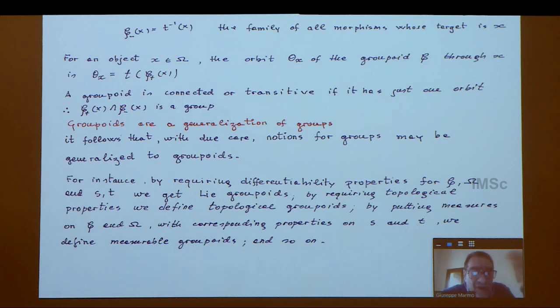You can use these two target and source maps and define morphisms which will land, or if you think of them as arrows, arrows which originate from X or arrows which terminate in X.